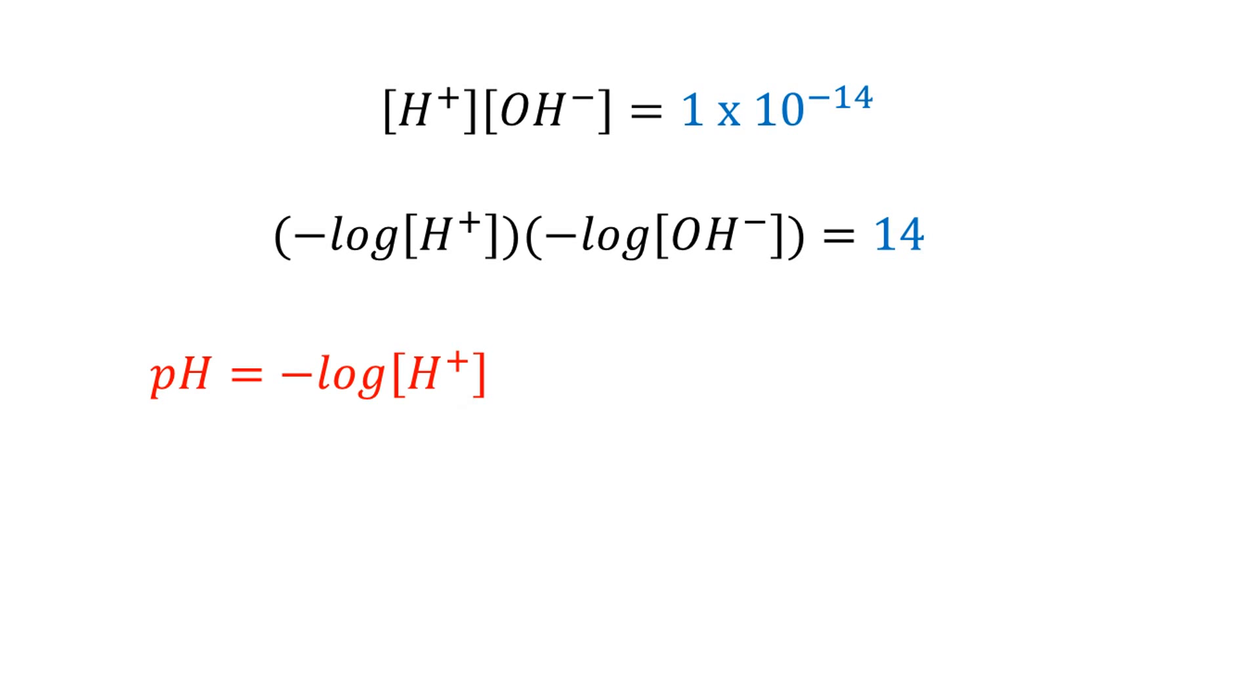In the same way, the second term is called pOH. Both of these terms can have values between 0 and 14, and the sum of both will always be equal to 14.